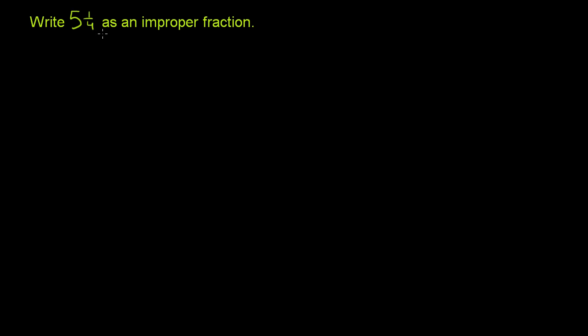Write 5 and 1/4 as an improper fraction. An improper fraction is just a pure fraction where the numerator is greater than the denominator. This right here, it's not a pure fraction. We have a whole number mixed with a fraction, so we call this a mixed number.